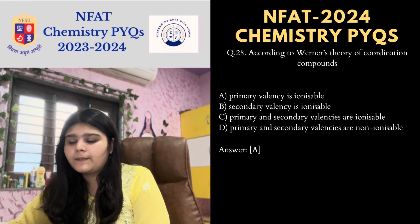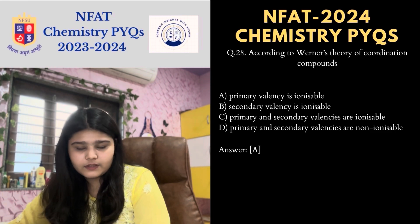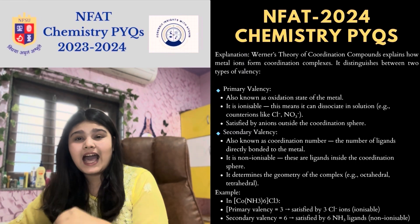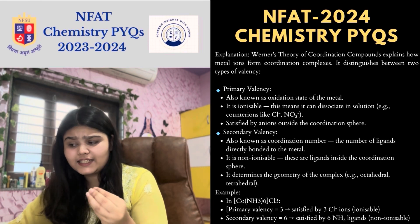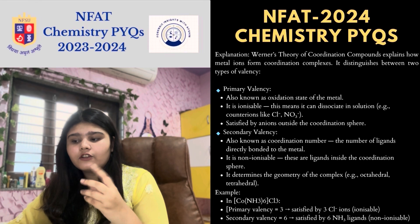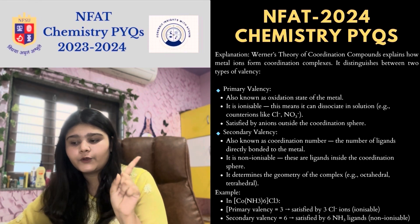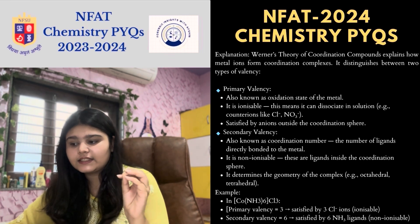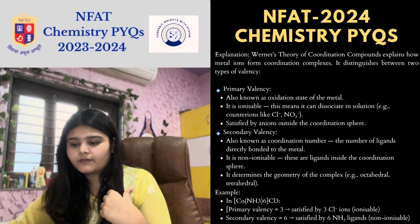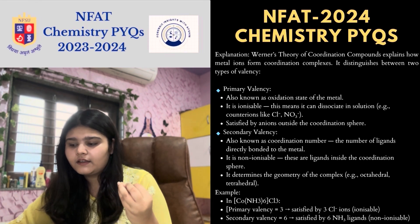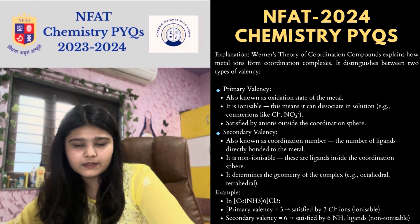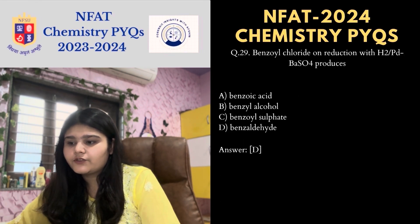Next MCQ: according to Werner's theory of coordination compounds, primary valency is ionizable. Primary valency is also known as the oxidation state of the metal — it is ionizable, meaning it can dissociate in solution and is satisfied by anions outside the coordination sphere. Secondary valency is the coordination number — non-ionizable, representing ligands directly bonded to the metal inside the coordination sphere, determining the geometry of the complex.